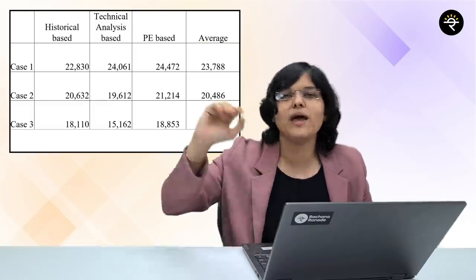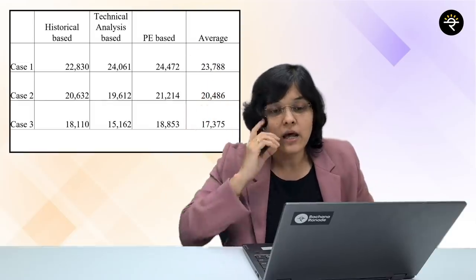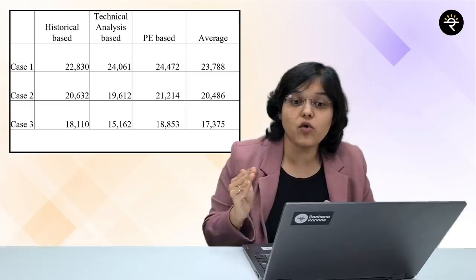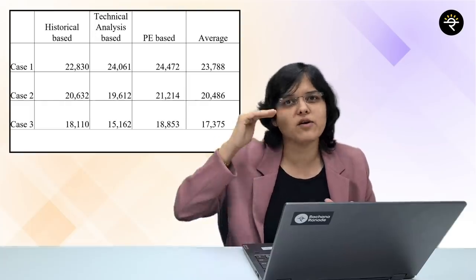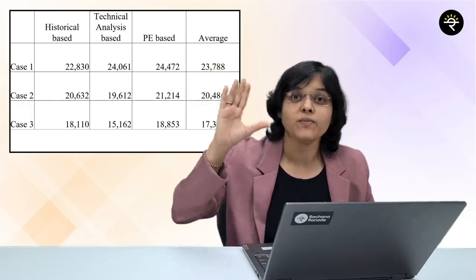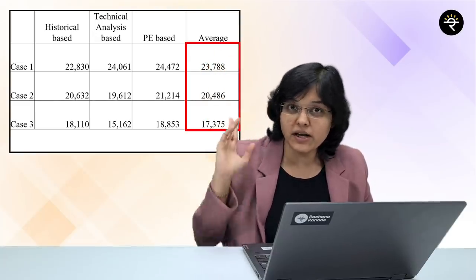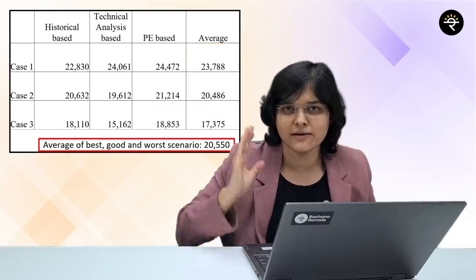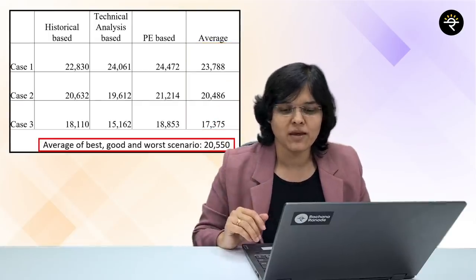That's way above where we stand today. Taking a further average of worst, good, and best case scenarios, the vertical average comes to 20,550 - still almost 11-12% upside from where we are right now.